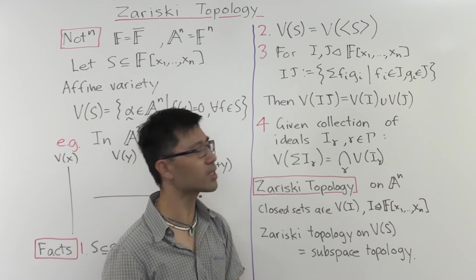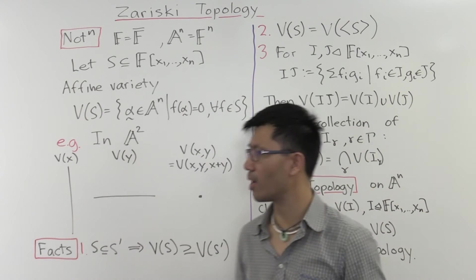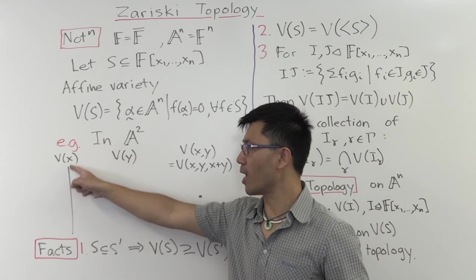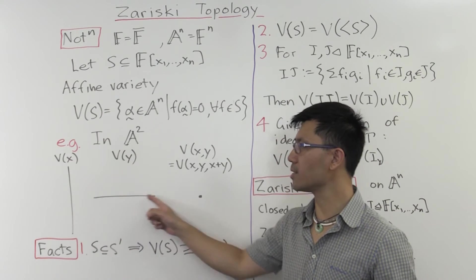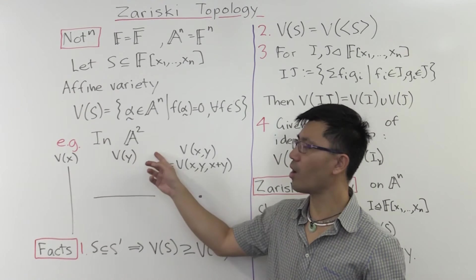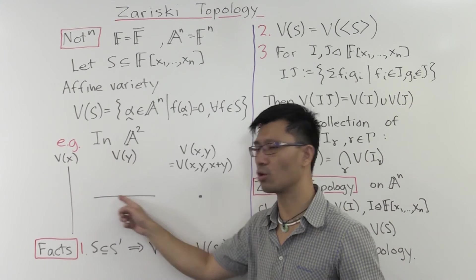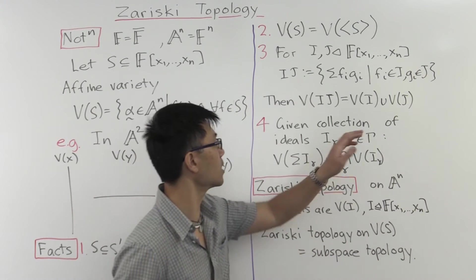Okay, so let's just pick a simple example where that's true and see why that's the case. Here's the variety where x is zero. This is where y is zero. What's the variety where xy equals zero? Of course, it's the union of these two. And that's what you see here.